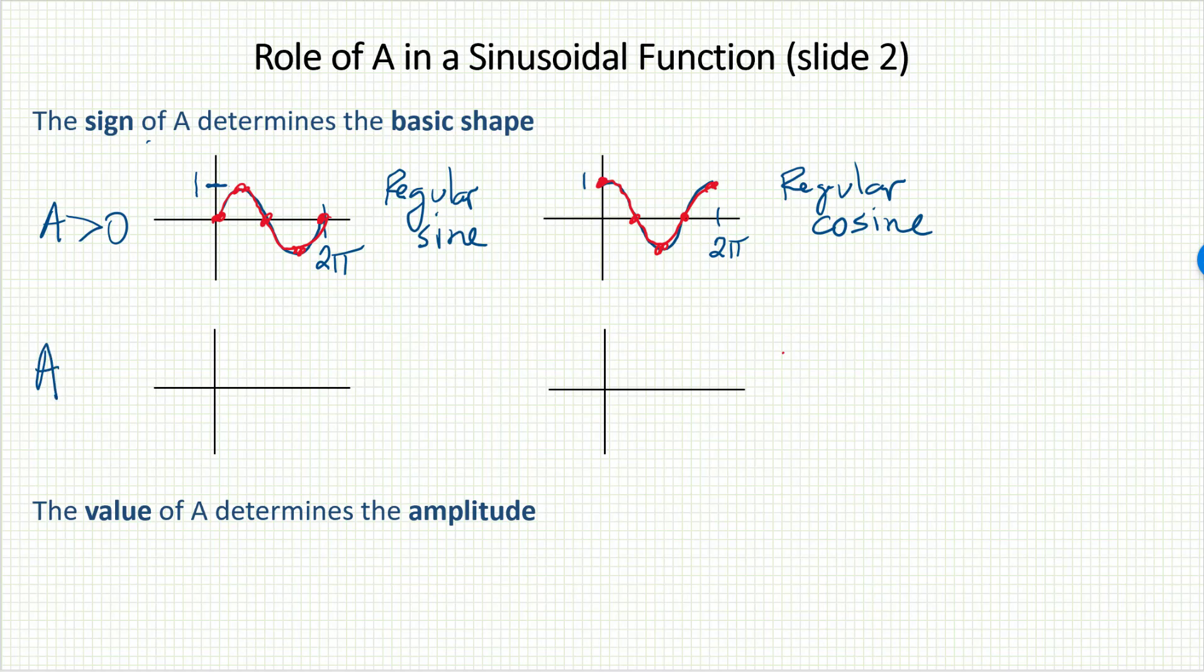Now, if a is negative, then these basic shapes will be reflected across the x-axis. That would give us either the reflected sine shape or the reflected cosine shape. I'll refer to the reflected sine shape as the valley and the hill.